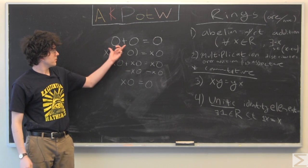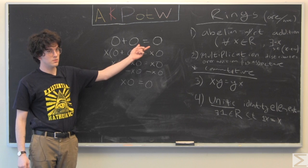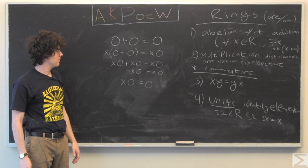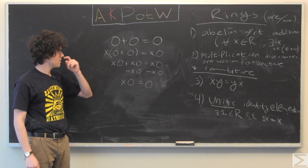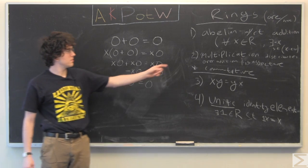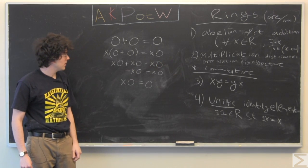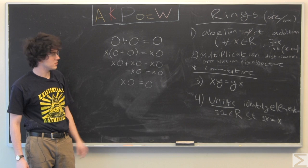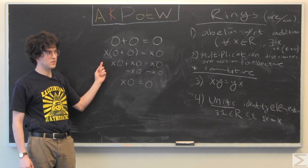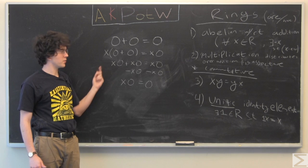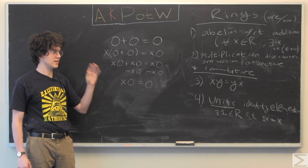So, we're going to start with 0 plus 0 equals 0, multiply both sides by x, use this second axiom, which was used kind of in a more abstract way in our last example.